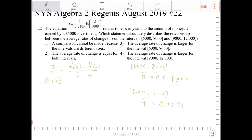Looking at this, you can tell that the average rate of change from 6,000 to 8,000 is faster than from 9,000 to 12,000. So the average rate of change is larger for the interval from 6,000 to 8,000. That's option three.